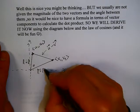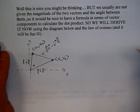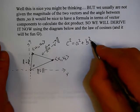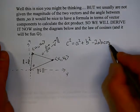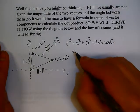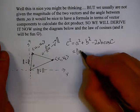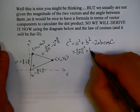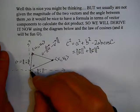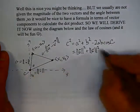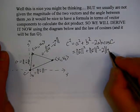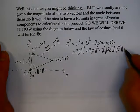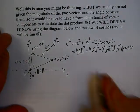This is a triangle, and the length of one side is the magnitude of u, the length of another side is the magnitude of v, and the length of the third side is the magnitude of u minus v. By the law of cosines, c squared equals a squared plus b squared minus 2ab cosine of c. Here a is the magnitude of u, b is the magnitude of v, and the angle at point c is theta.